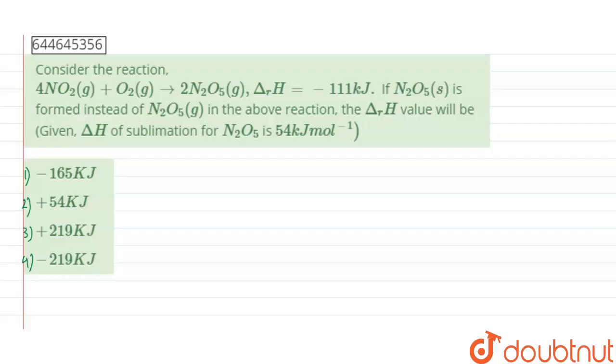Hello guys, so the given question says, consider the reaction and the heat change for this reaction given as minus 111 kJ. If N2O5 solid is formed instead of N2O5 gas in the above reaction, the heat change value will be, and here given that delta H of sublimation for N2O5 is 54 kJ per mole.